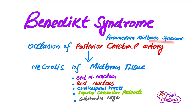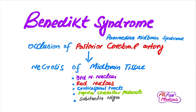Benedict syndrome, or paramedian midbrain syndrome, occurs due to the occlusion of the posterior cerebral artery. The occlusion leads to necrosis of the midbrain tissue, and the following structures will be involved: third nerve nucleus, red nucleus, corticospinal tract, superior cerebral peduncles, and substantia nigra.